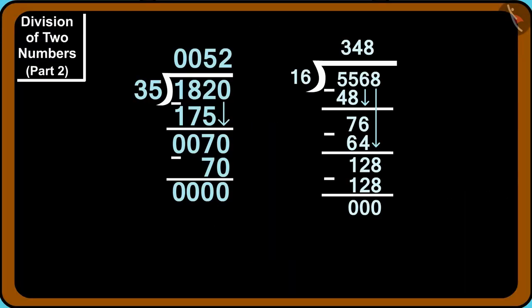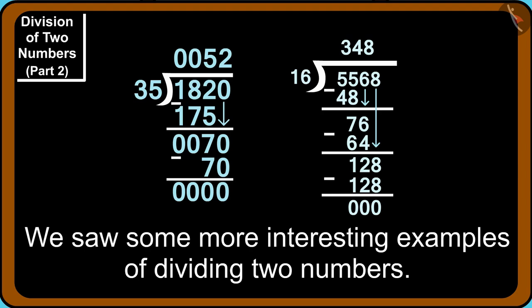5568 from here became 348 out here. This means the price of each toy is 348 rupees. Children, in this video, we saw some more interesting examples of dividing two numbers.